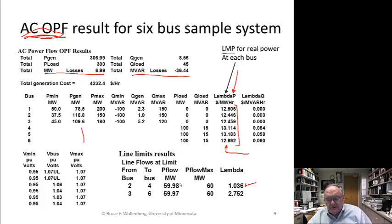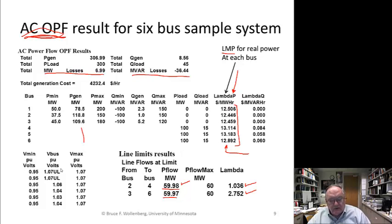We've limited the 2-to-4 line to 60 megawatts — it pulls to 59.98 — and 3-to-6 to 59.97. There's a Lagrange multiplier associated with each of these. For voltages: the first two buses are generator buses and both go to the maximum voltage — they push up to the maximum, which gives some more minimization. The other three are still just below the max, but the voltages go up too.